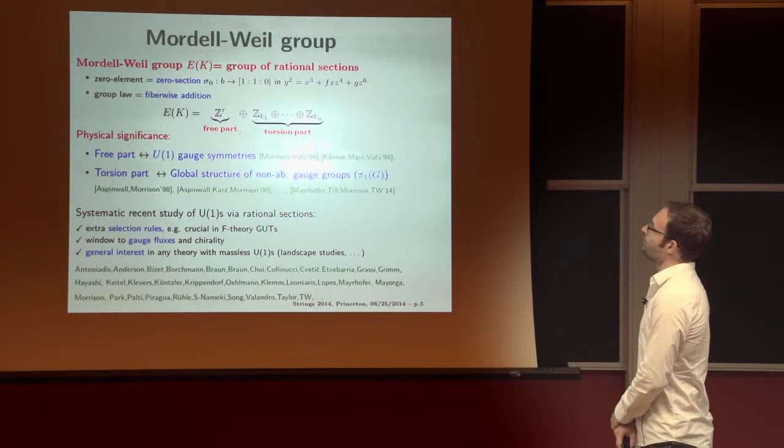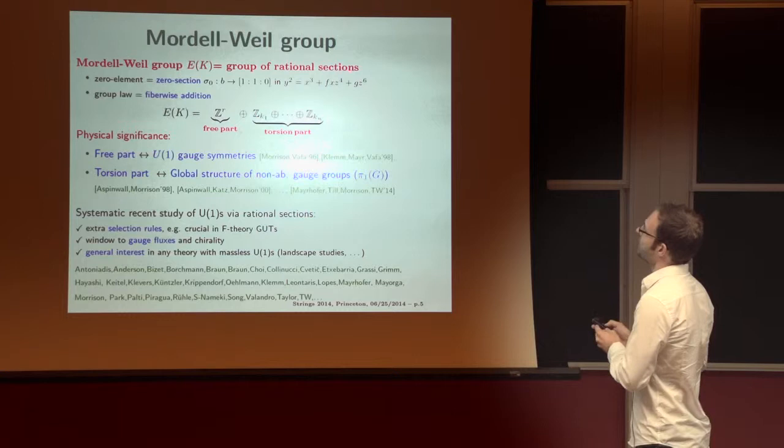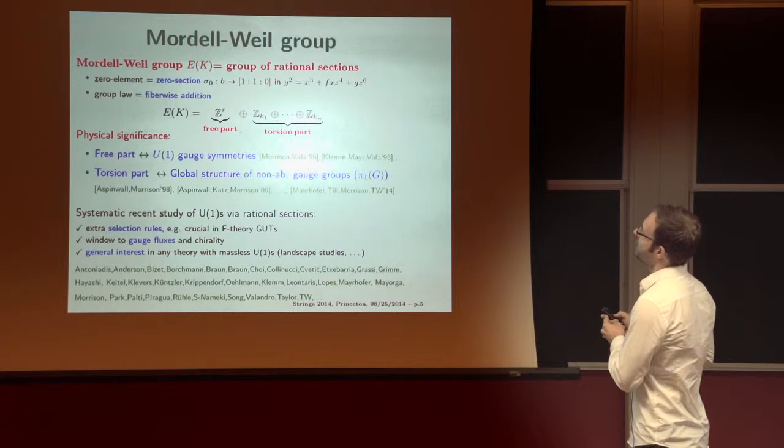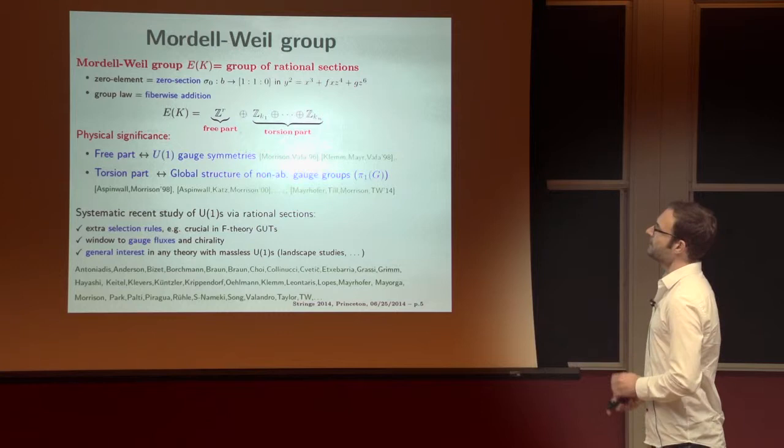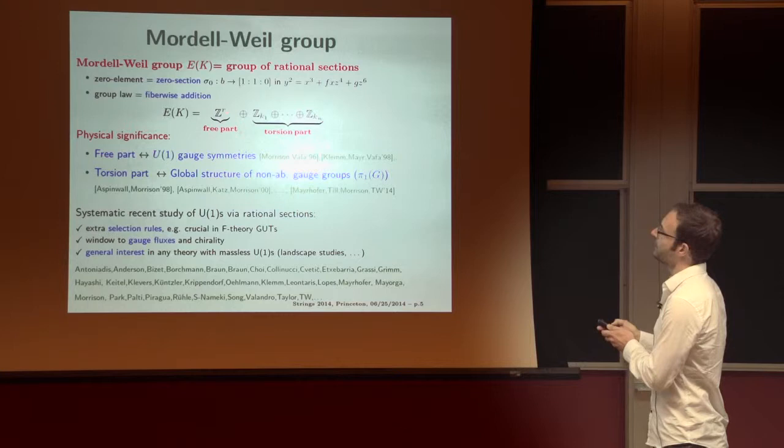So, in our context, therefore, the Mordell-Weil group is the group of rational sections. Its zero element is given by the zero section, which in a Weierstrass model we always have. Namely, it's the map from B to the point (1:1:0) in the elliptic fiber. The group law is inherited from the group law on the curve by fiber-wise addition of the points. And again, the famous Mordell-Weil theorem states that this group is finitely generated and it comes with a free part, with R being the rank, and the torsional part.